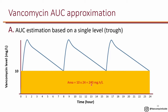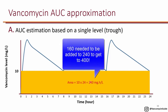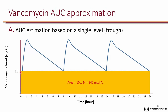We know the AUC is at least 240, and remember we want the AUC-to-MIC ratio to be at least 400. So if the MIC happens to be 1, we need an AUC of 400. This highlighted area is at least 240, so we're hoping that all the area at the top adds at least 160 to get us to 400.